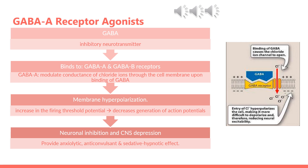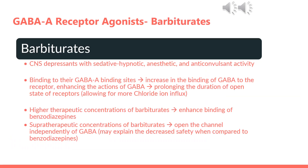GABA-modulating drugs such as barbiturates and benzodiazepines have allosteric sites that they bind to. Barbiturates are CNS depressants with sedative-hypnotic, anesthetic, and anticonvulsant activity. The binding of barbiturates to their GABA-A binding site increases the binding of GABA to the receptor, enhancing the action of GABA and prolonging the open state of the GABA-A receptor, which allows for more chloride ion influx. Higher concentrations of barbiturates can also enhance the binding of benzodiazepines, but supertherapeutic concentrations can cause opening of the channel independently of GABA, which could explain the decreased safety associated with barbiturates when compared with benzodiazepines.